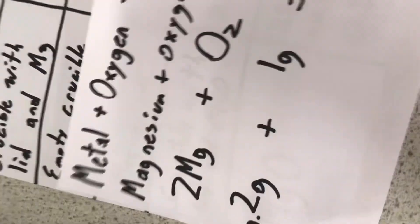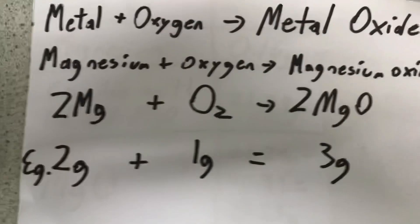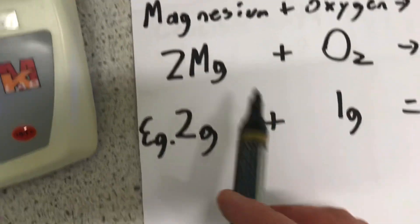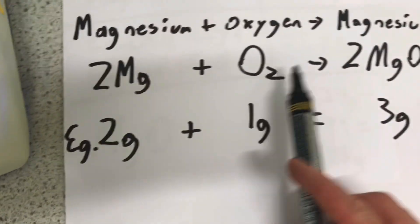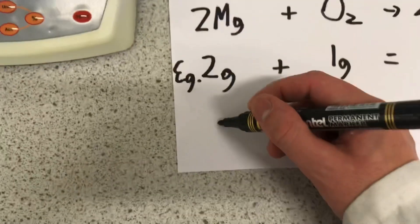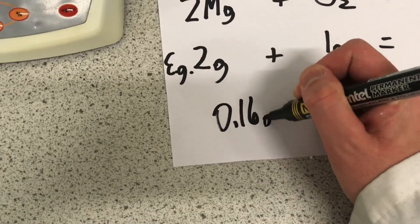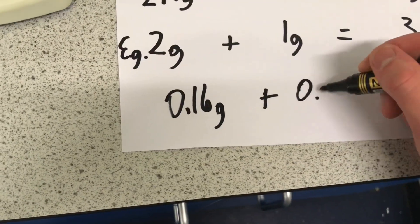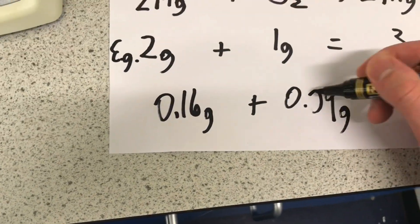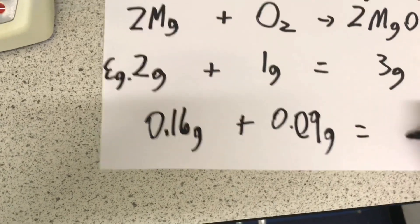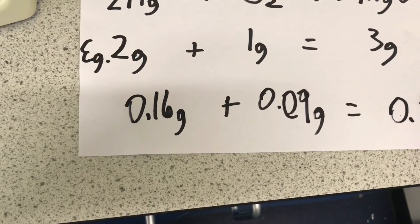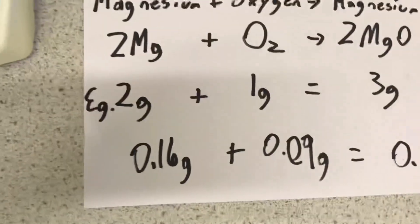So going back to our reaction, I gave you an example earlier, where we have magnesium reacting with oxygen to make magnesium oxide. But in this case, we had 0.16 grams of magnesium, reacting with 0.09 grams of oxygen to make 0.25 grams of magnesium oxide.